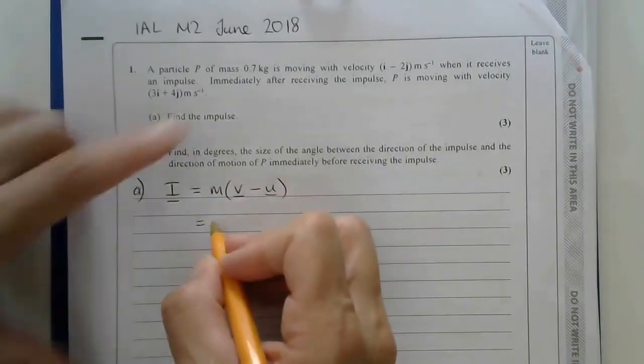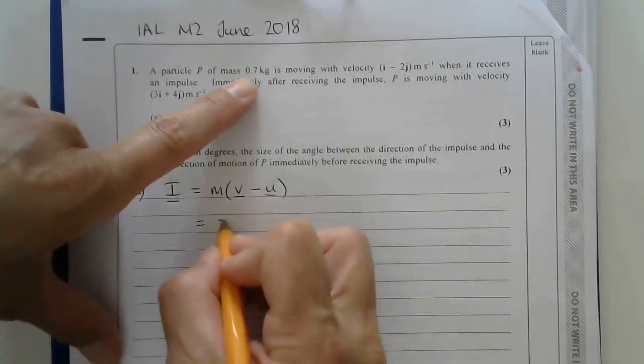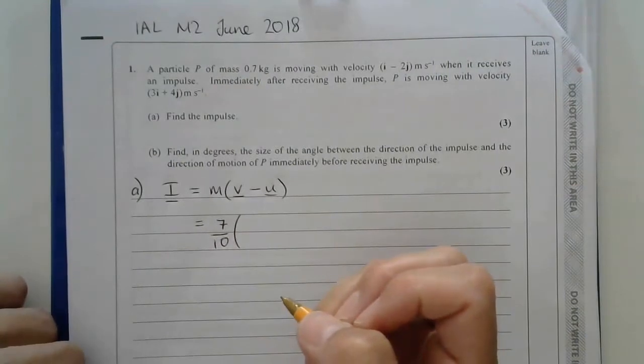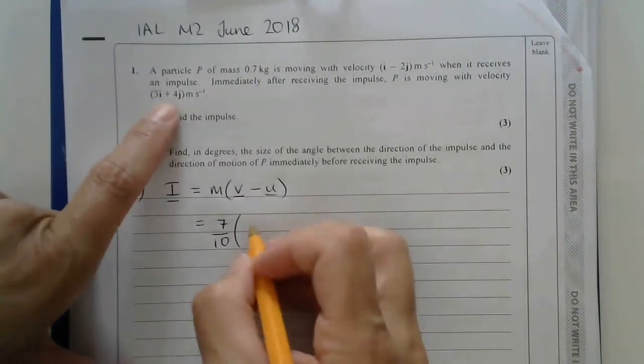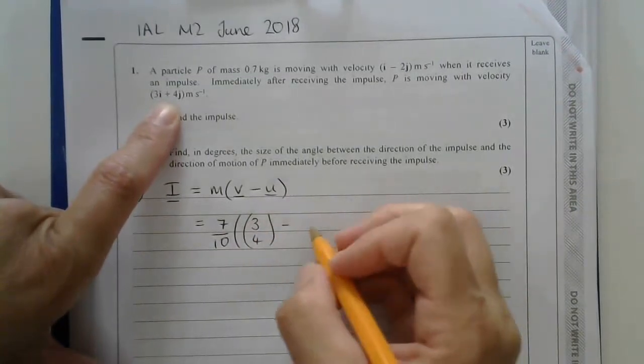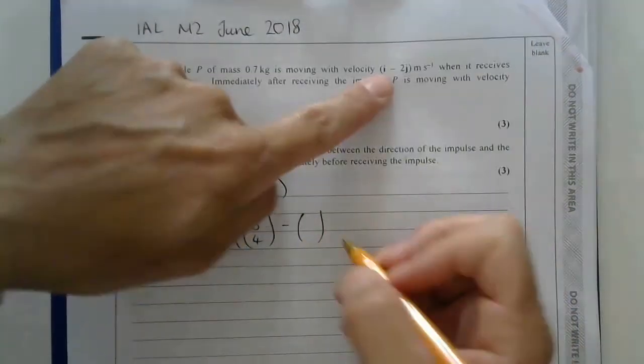So the mass was 0.7, which is 7 tenths. The final velocity was this one, so I'll write that as a column vector, and the initial velocity was this.